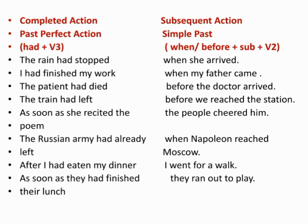After I had eaten my dinner, I went for a walk. First you completed your dinner, then you went for a walk. So the first action is completing dinner — 'had eaten' in past perfect. The next action, going for a walk, is in simple past: 'went.' After I had eaten my dinner, I went for a walk.